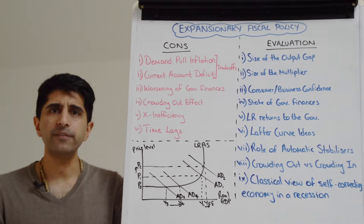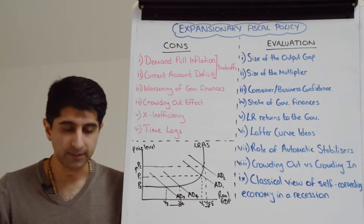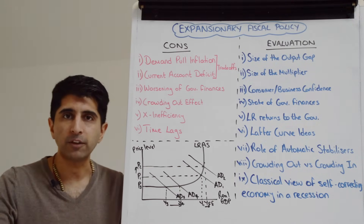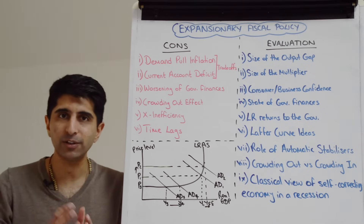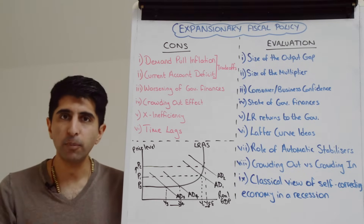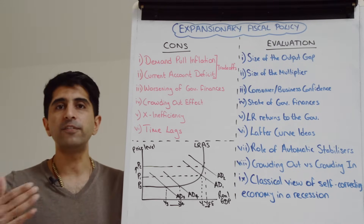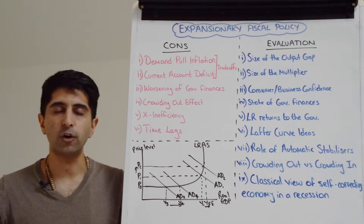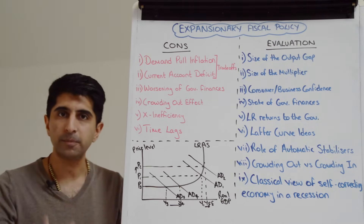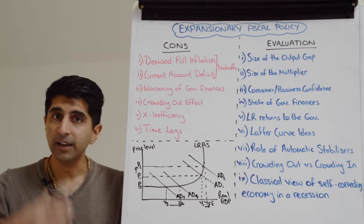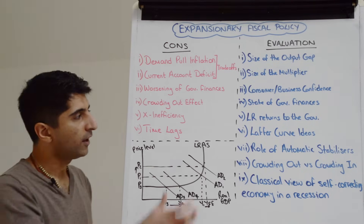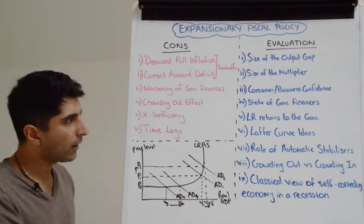Expansionary fiscal policy can also have time lags. Government spending on infrastructure projects involves rounds of spending, so you won't get the economic boost until the project is finished. Similarly, income tax cuts and corporation tax cuts take time to feed through — households take time before spending a tax cut, and businesses take time before investing increased retained profits from a corporation tax cut.